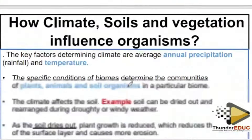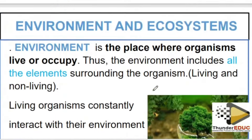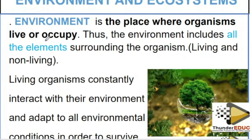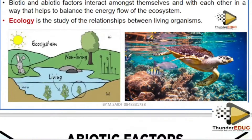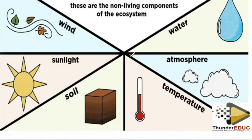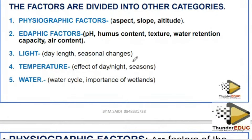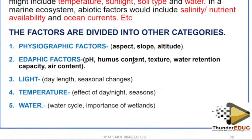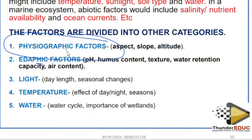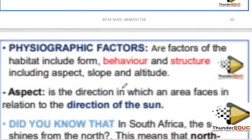These are the aquatic biomes. When you come to environment, please know at least the definitions because they can come up in terminologies. Abiotic factors are questions you can answer very fast. We rarely ask about edaphic factors, but when we do bring abiotic factors, we may ask about the amount of air in the soil. In most exams, I've seen physiographic factors — aspect, slope, and altitude — come up frequently.